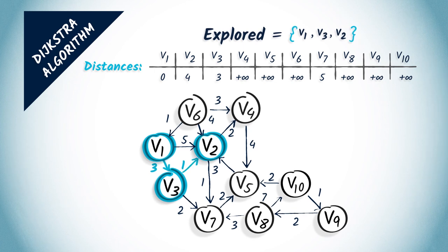v2 has two neighbors, v4 and v7. v4 is estimated to be at distance 4 plus 2, which is 6, and v7 at distance 4 plus 1, which is 5. So, we update the distance to v4. As far as v7 is concerned, the new found distance is not better than the old one, so it has no effect.